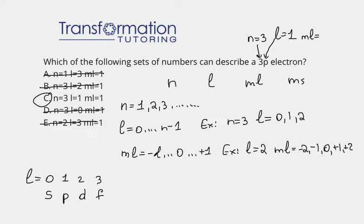Well, the rule is again that it goes from minus L through 0 to plus L. So it will go from minus 1 to 0 to plus 1. Those are all of my possible values for ML. And here my ML is equal to 1, so that works. So therefore C in this case is the correct answer.